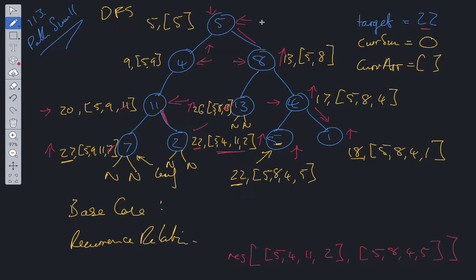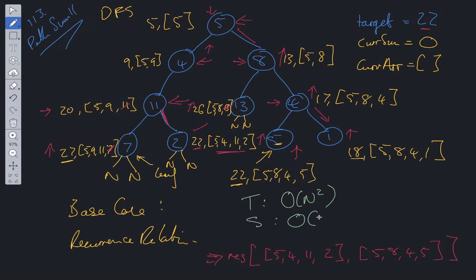We get to this level and realize there's nowhere else to go, so we exit the recursive function. All we need to do is return res. The time complexity for this solution is O(N²). In the worst case scenario we could have a complete binary tree with N over two leaves, and for every leaf we'd have to perform N operations. The space complexity is O(N) because we are storing N values within current array. The result array used to store results is not included within the space complexity.